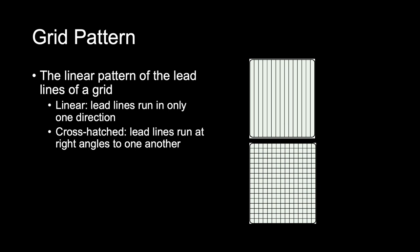Grid pattern refers to the linear pattern of the lead lines of a grid. There are two types of grid patterns: linear and crossed, or cross-hatched. A linear grid has lead lines that run in only one direction. Linear grids are the most popular because they allow angulation of the x-ray tube along the length of the lead lines. A crossed or cross-hatched grid has lead lines that run at right angles to one another. Crossed grids remove more scattered photons than linear grids because they contain lead strips oriented in two directions instead of one.